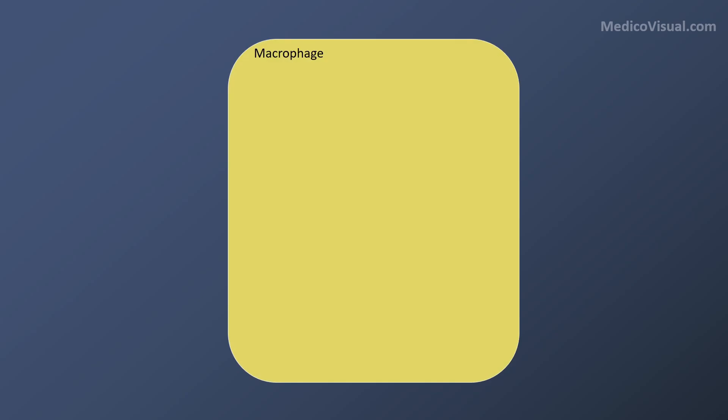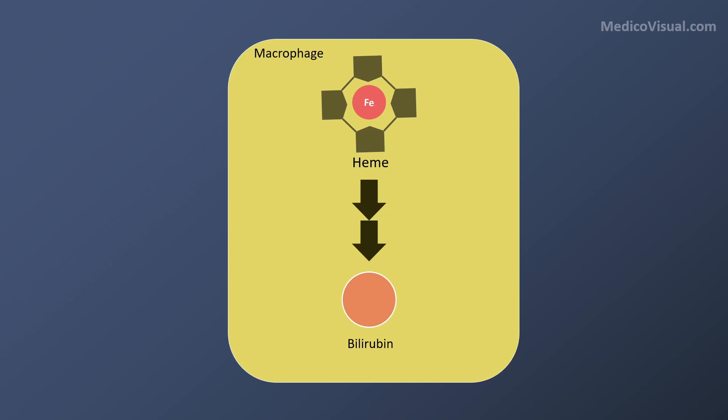Let's suppose this is a macrophage. In the spleen and even outside the spleen, when RBCs are broken, hemoglobin is released. Hemoglobin consists of heme and globin. Globin is basically a polypeptide chain. The globin chain is digested and converted into free amino acids. The heme is taken up by macrophages and converted into bilirubin through a multi-step pathway, because heme is a toxic substance that can cause direct cell injury and even multi-organ damage, especially acute kidney injury. Thankfully, macrophages convert heme into bilirubin.